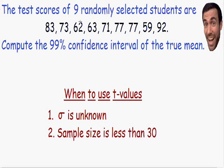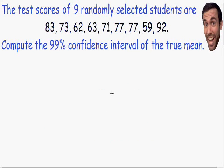The test scores of nine randomly selected students have been given to us, so both conditions have been met — that's why we have to use a t value instead of a z value. Now let's get started. We need to compute a 99% confidence interval of the true mean.